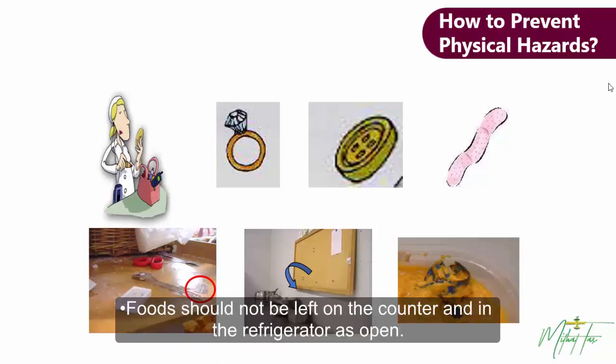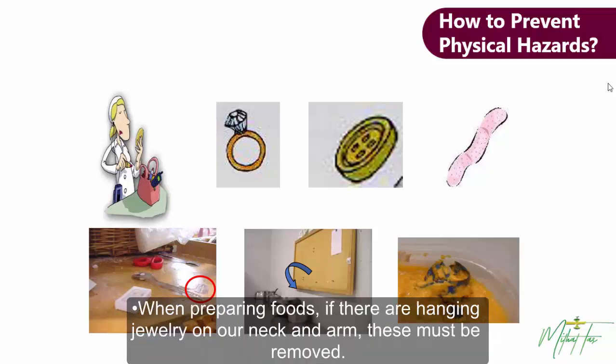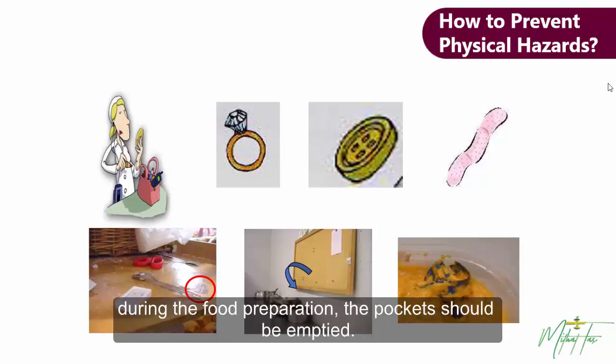Foods should not be left on the counter or in the refrigerator uncovered. If we have a plaster on our hand when preparing food, we should wear gloves. When preparing foods, any hanging jewelry on our neck and arms must be removed. If there is anything in the pockets of clothes such as aprons and shirts worn during food preparation, the pockets should be emptied.